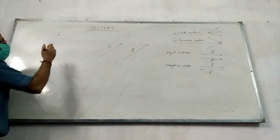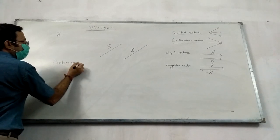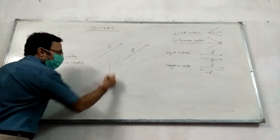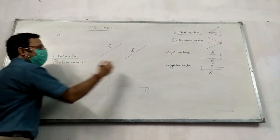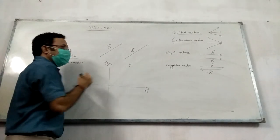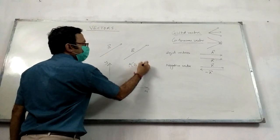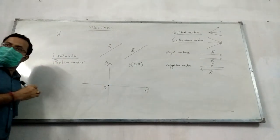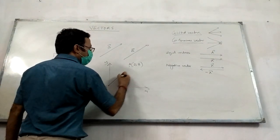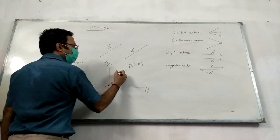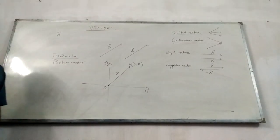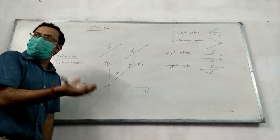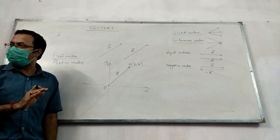A very good example of a fixed vector is the position vector. This is the x-axis and y-axis. This is a point A with coordinate, say, 2, 3. If we join a line vector from origin to this point, then we call this vector the position vector. Vector A is the position vector of the point A, and it has to start from the origin. So this is a fixed vector.